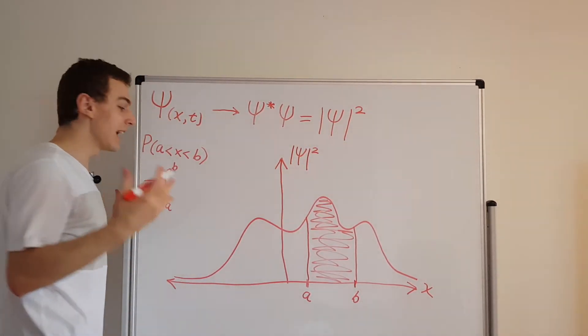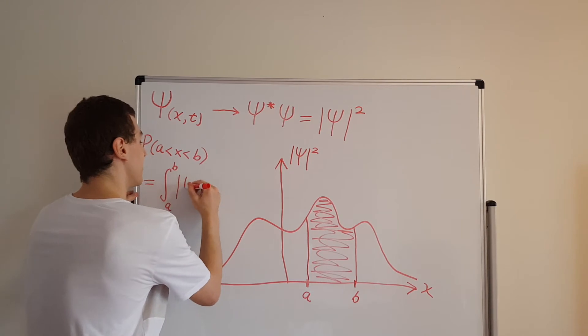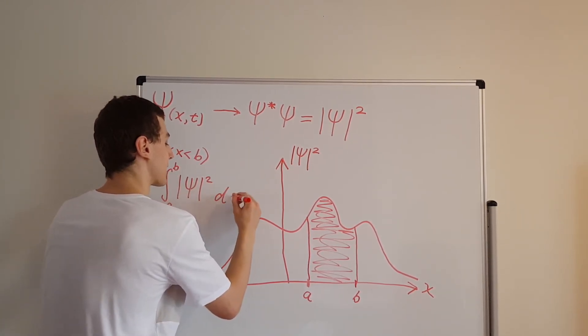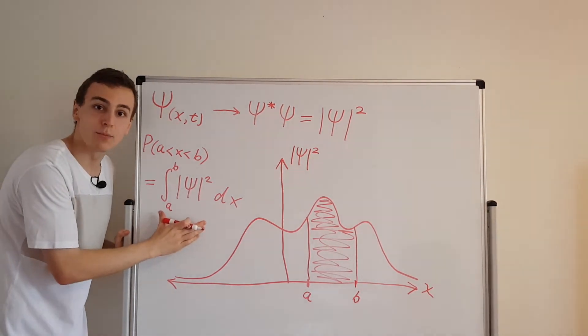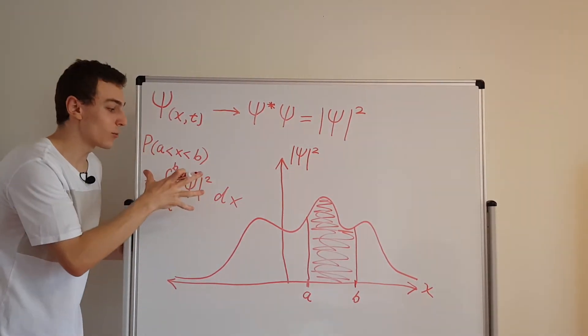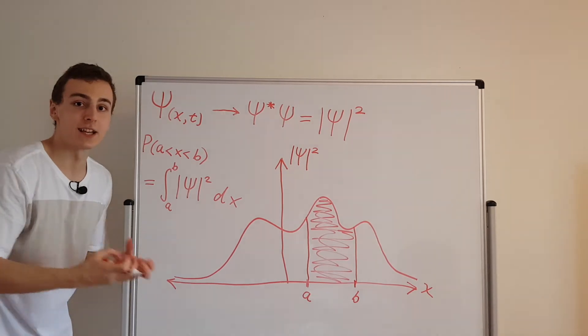This guy squared dx. So this is actually the probability. This is the thing that we can have a physical meaning associated with it.